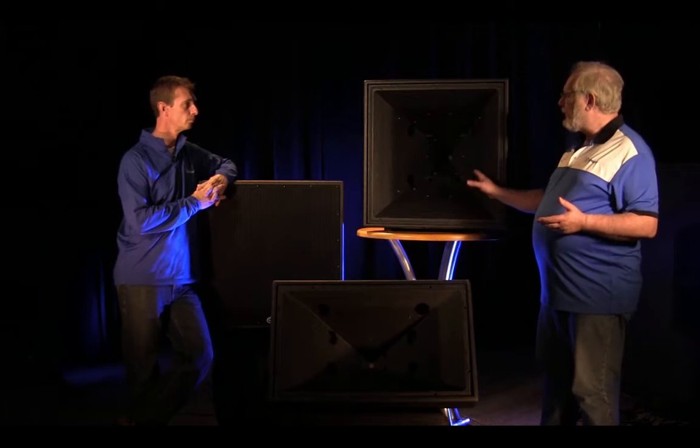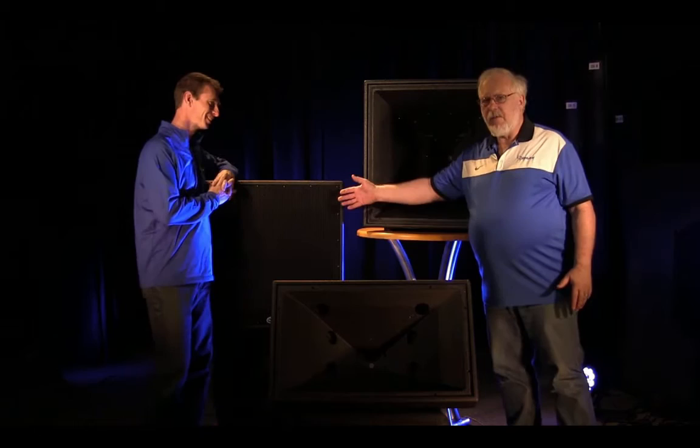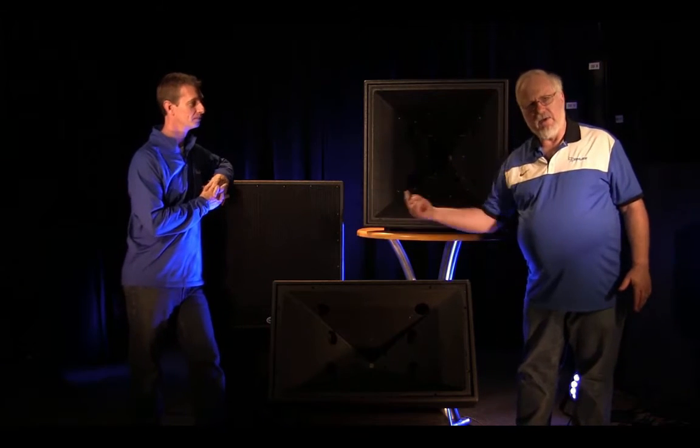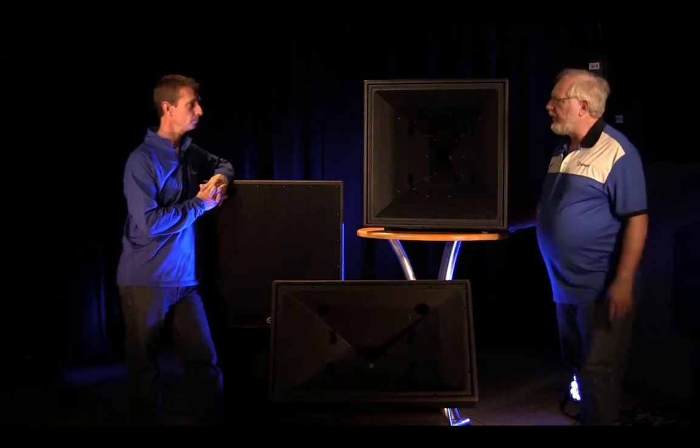And the big difference between these three boxes is the coverage pattern. This one's 50 by 50, it's a rotatable horn—that's a joke. This one's 60 by 60, and this one is 90 degrees by 60 degrees. So, Skip, tell us about the application for these boxes.